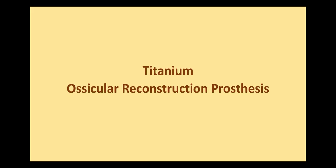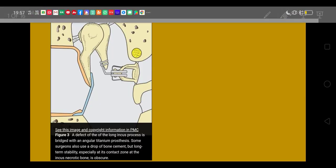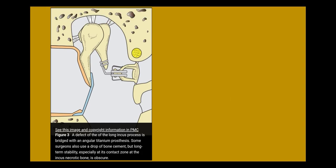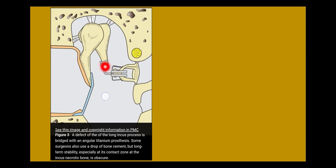Let us have a look at the various titanium ossicular reconstruction prostheses. When there is a defect of the long process of incus — the long process descends down, turns into the lenticular process, and then attaches to the head of stapes. There is a small vessel that runs through it, and when there is a virulent infection, that leads to avascular necrosis of this joint. This is the most common ossicular defect.